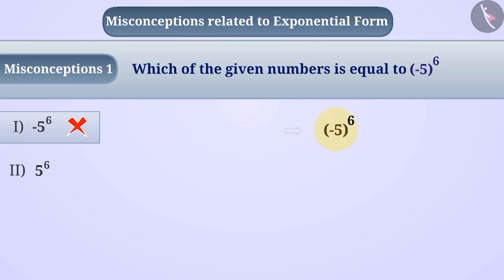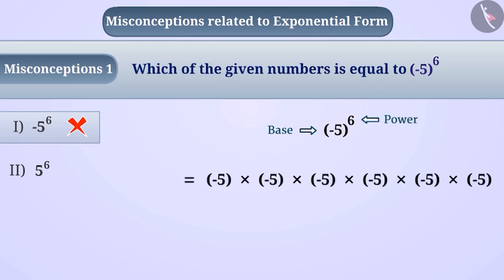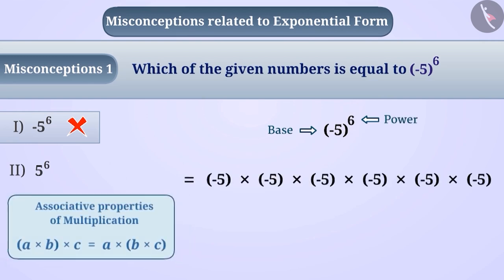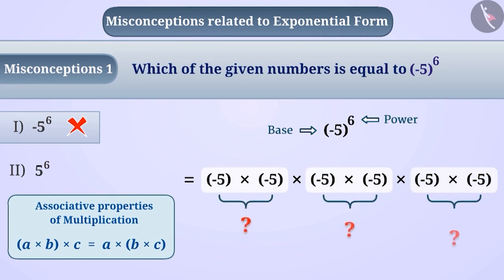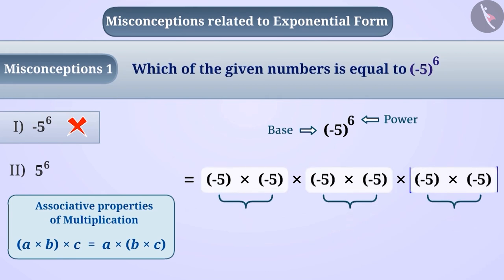Minus 5 raised to the power of 6 has minus 5 as base and 6 as its power. We can represent it using the associative property of multiplication by grouping them in pairs. The result of multiplying each group is 25, which is a positive number.